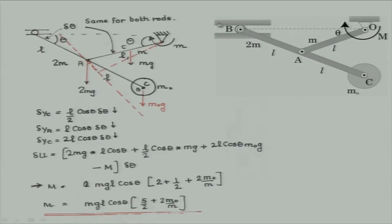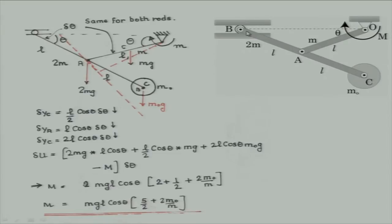But the deal is that point A, because of rotation from this rod, will move to one side — causing a split. How to get rid of that split? We have this entire assembly which is on a roller. So I can move this entire assembly on the other side to close that split. So ultimately, that is how the final displacement diagram will look like for the virtual displacements. We know what is delta y c, delta y a, delta y c.